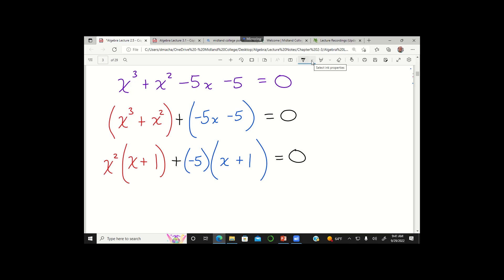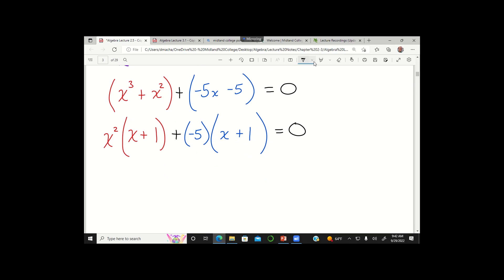Now what I have here on the left hand side is I've got two terms, one of them being in red, the other in blue. And these two terms have a greatest common factor themselves. Both of these terms have the factor x plus 1. And so now I can factor out this x plus 1. And that will look like x plus 1, and after factoring out the x plus 1, what I'm left with then would be x squared plus a negative 5.